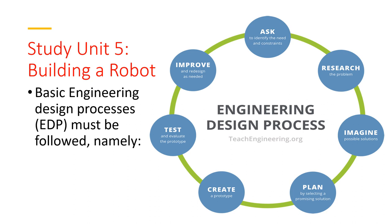In building a robot, the basic Engineering Design Process, called EDP, must be followed. The diagram shows the basic steps: first, identify the need and constraints — do you have a problem or need? Then do your research, imagine possible solutions, plan by selecting a promising solution, create a prototype, test and evaluate it, and finally make improvements.